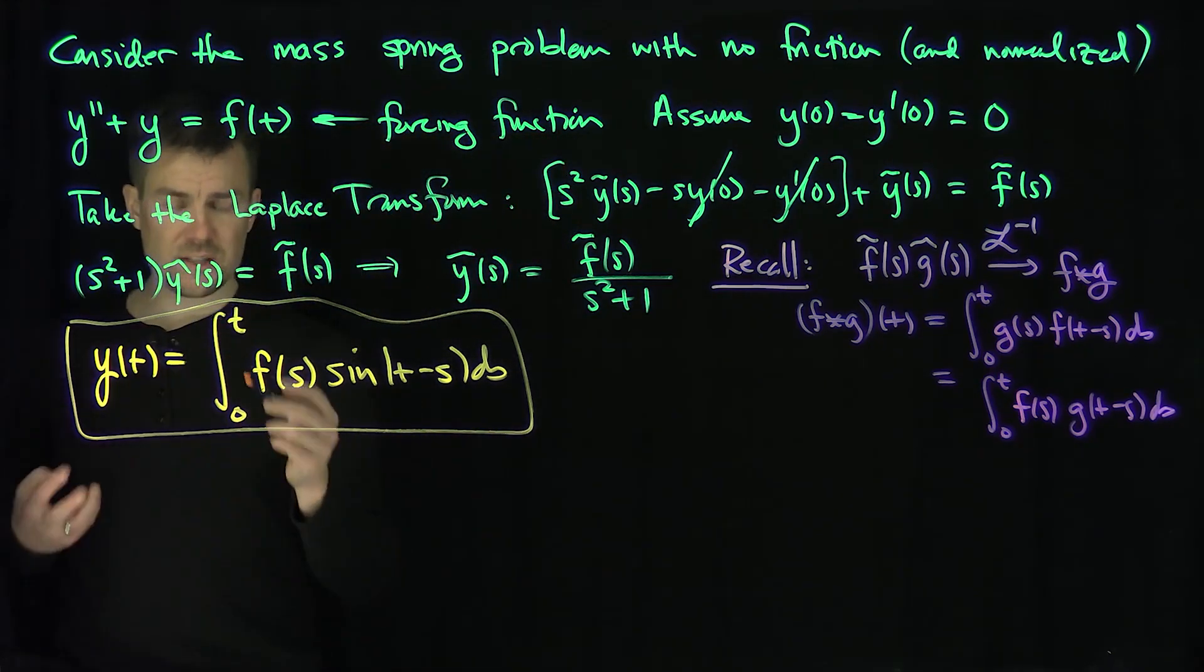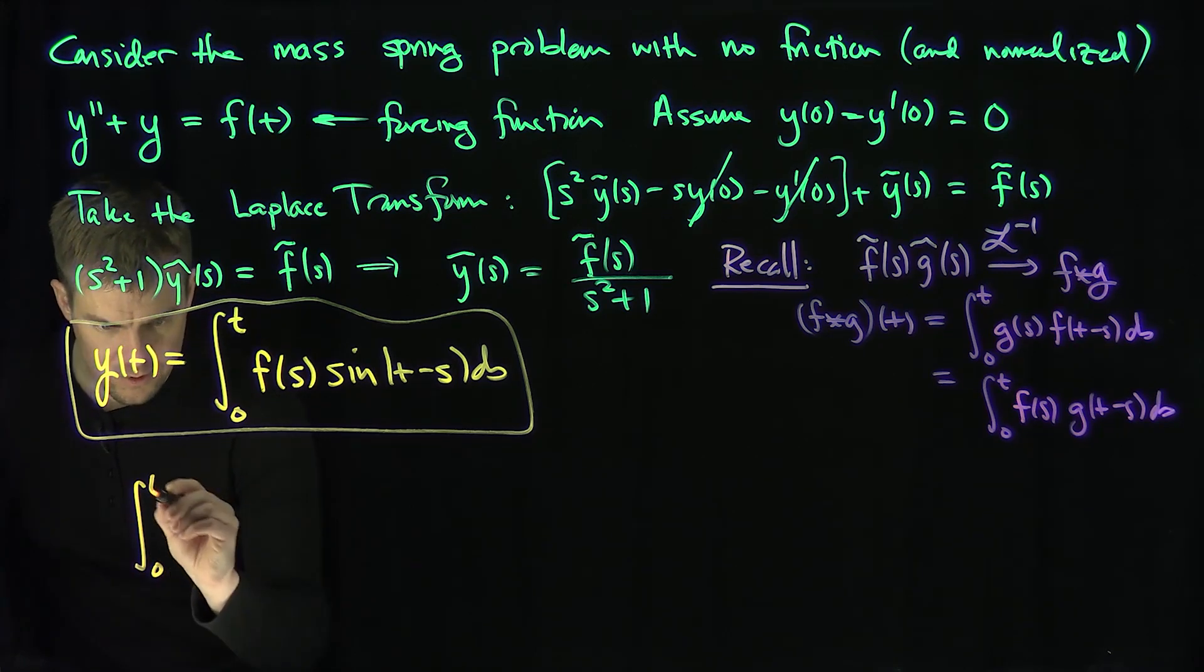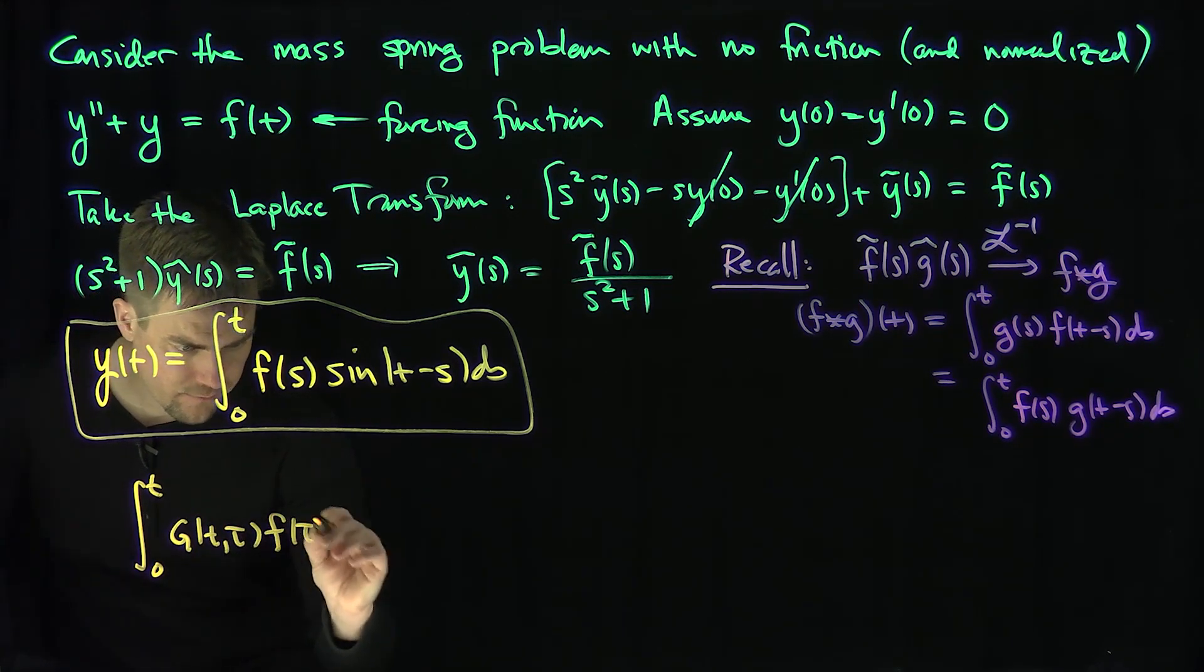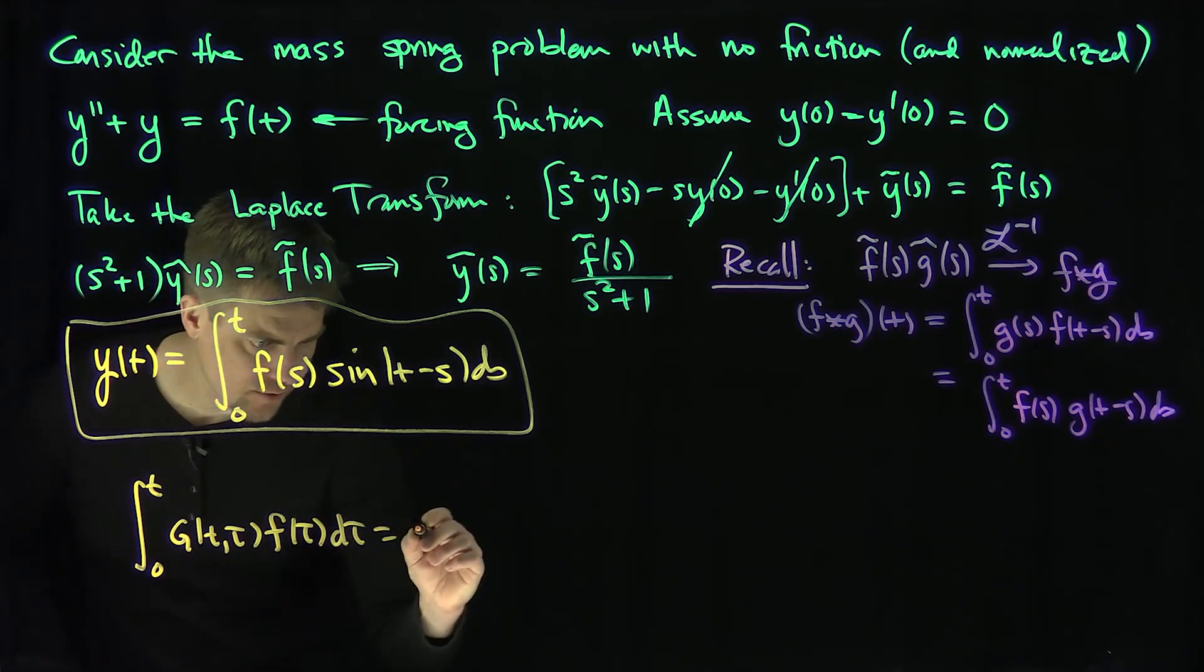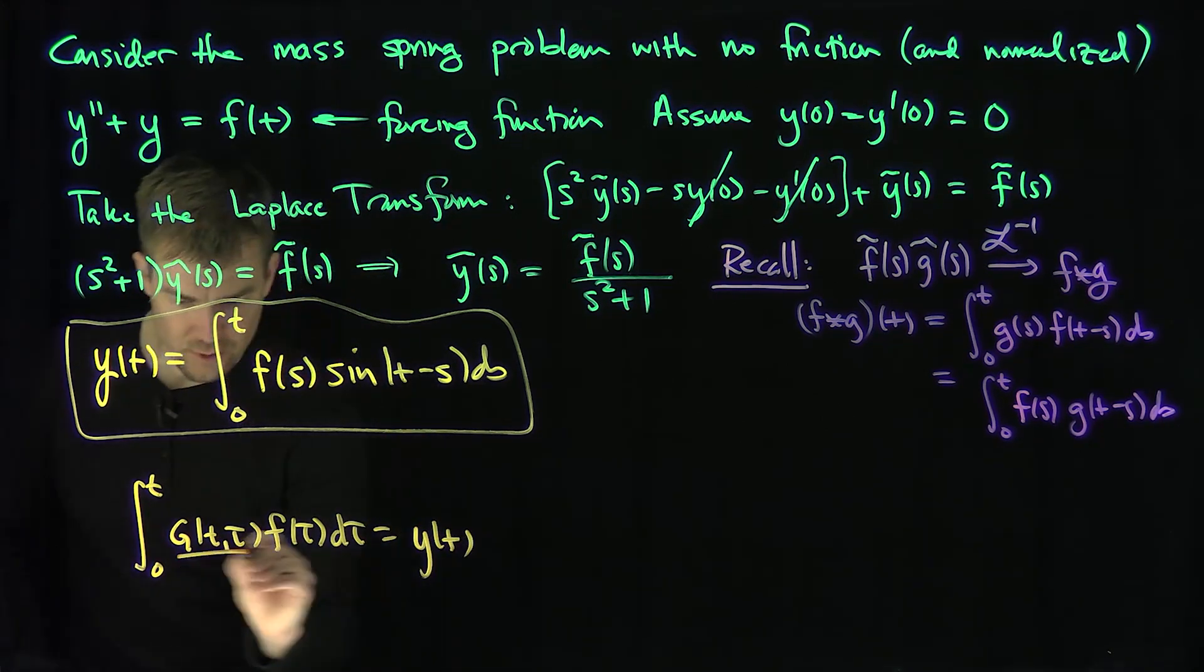So in other words, now I can define the Green's function, because recall that the Green's function has to be what? The Green's function has to have the form, that if I integrate from 0 to t, g of t tau, f of tau, that's the force, d tau, has to be the solution of your second order equation, has to be your solution, y of t.